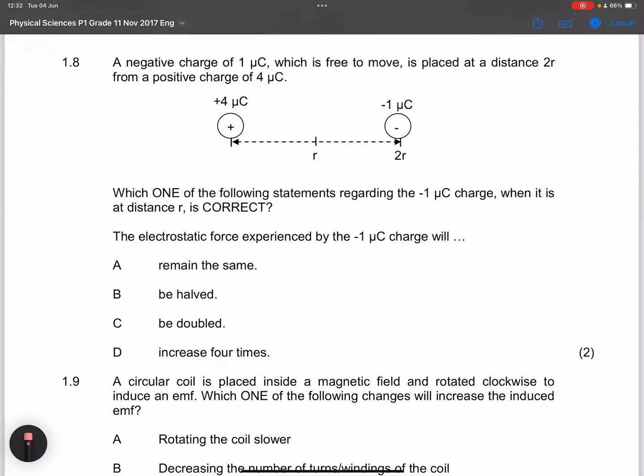The next question, they say a negative charge of one microcoulomb, which is free to move, is placed at a distance 2R from a positive charge of four microcoulombs. They say which one of the following statements regarding the one microcoulomb charge when it is a distance R is correct. Obviously, if I were to bring it closer, it means that the force between the two should be larger. So the force between the two will be a larger force. The electrostatic force experienced by the one microcoulomb charge will increase.